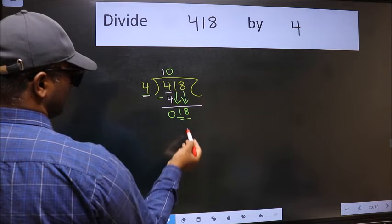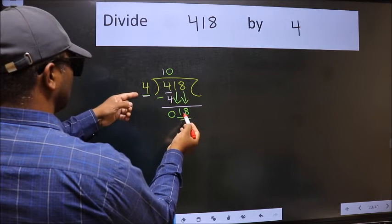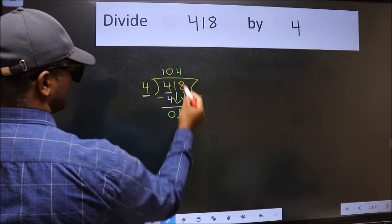Now 18. A number close to 18 in the 4 table is 4 times 4, which is 16.